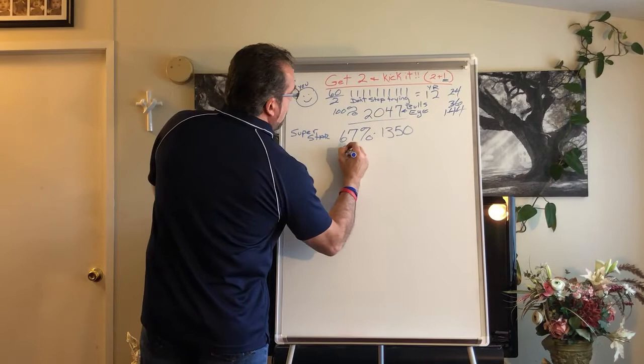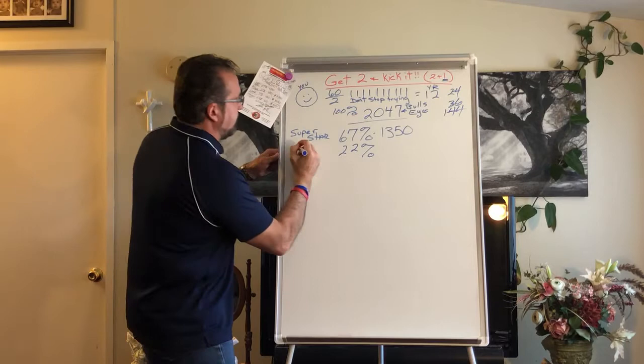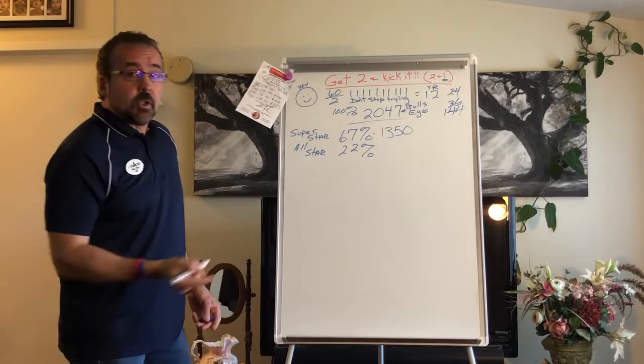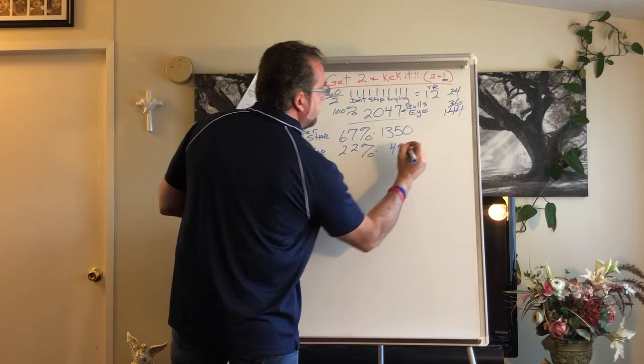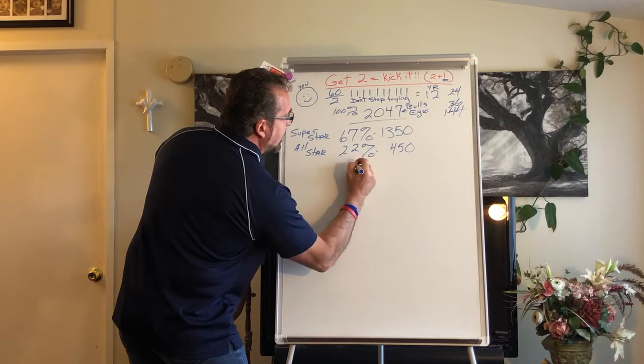Next number is going to be 22 percent, and we're going to call that all-star, because that's really good. 22 percent is not bad at all. That's going to give you 450 people.